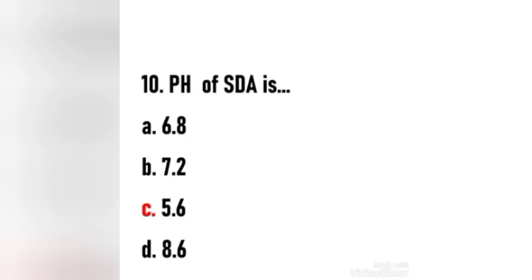Last question: The pH of SDA is — 6.8, 7.2, 5.6, or 8.6? The right answer is option C, 5.6. Sabouraud dextrose agar is a selective medium primarily used for the isolation of dermatophytes. Other fungi, yeast, and filamentous bacteria such as Nocardia can also grow in SDA. The acidic pH of 5.6 inhibits the growth of bacteria but permits the growth of yeast and most filamentous fungi.